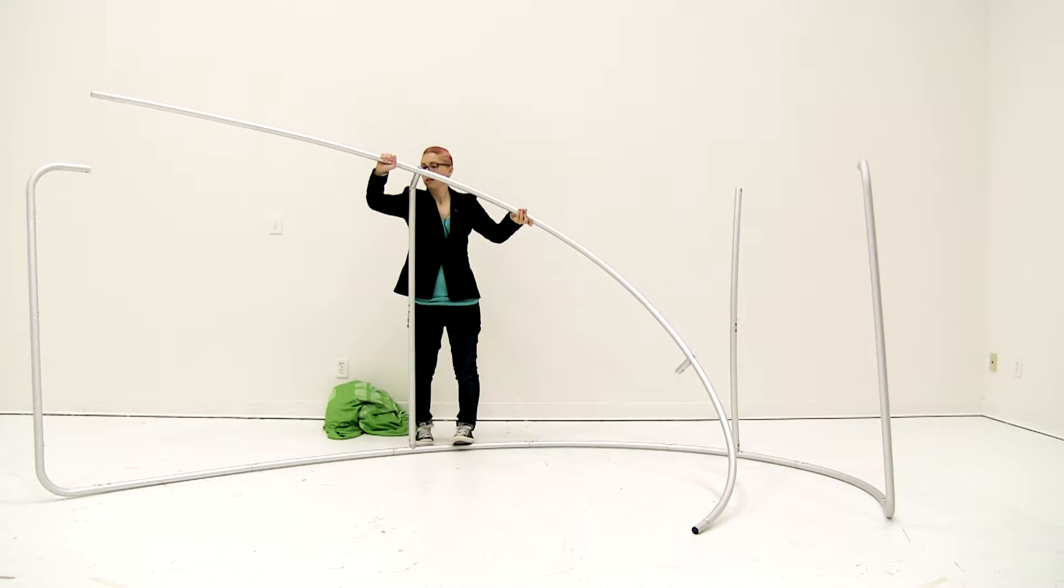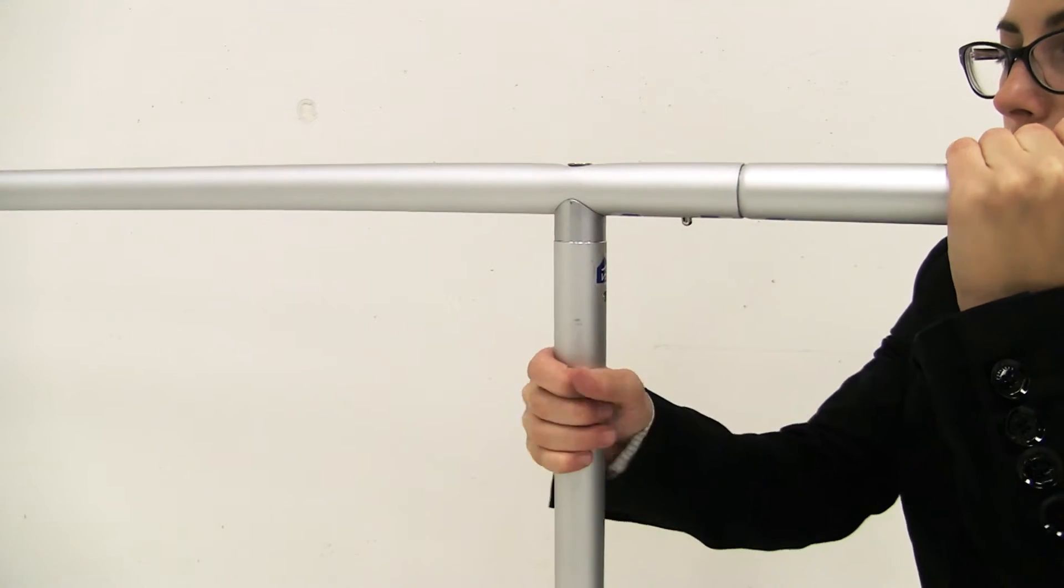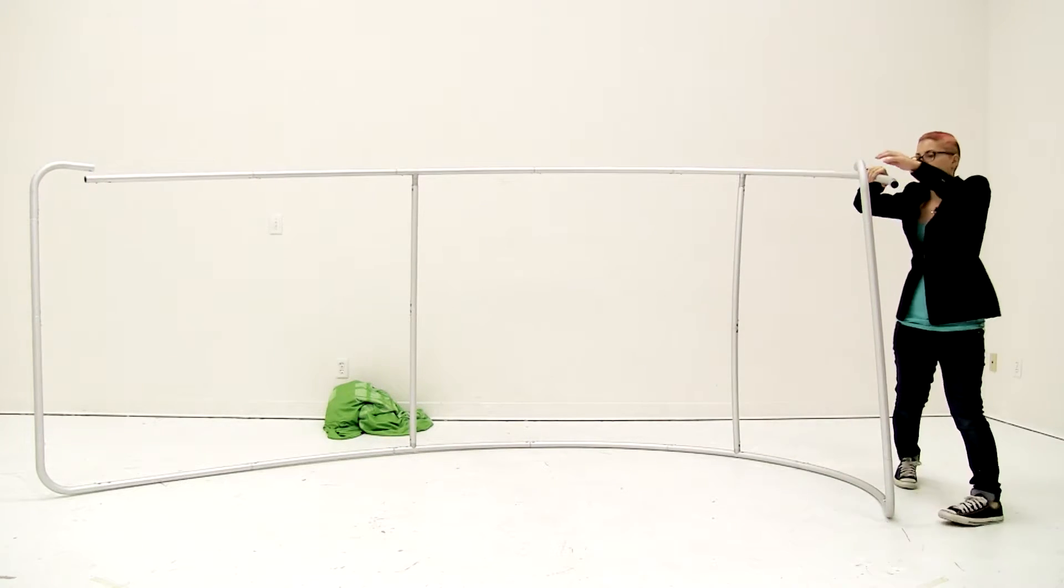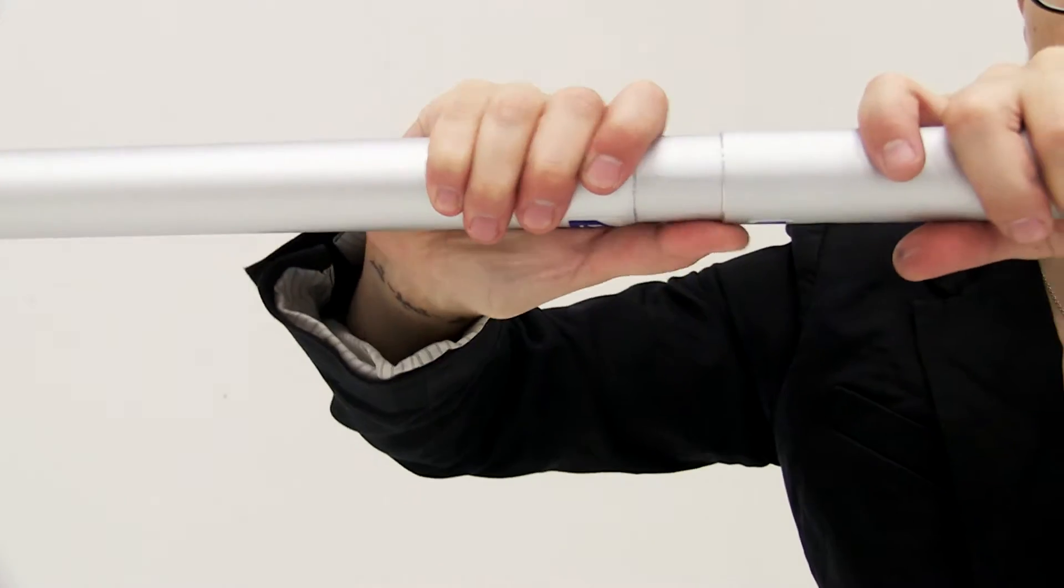You're just going to insert this middle hub into the top pole and then using the push button secure into place, and then you're going to attach it to the end poles. That's where you want to secure it, on the ends.